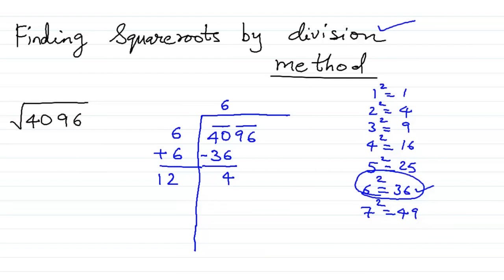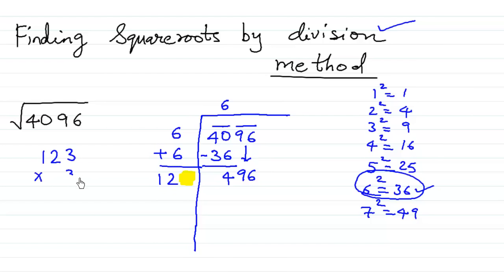We need some space to write one more digit. Then we bring down 96 together — remember it is a group, so 96 comes down together to give 496. Now we are looking for a number starting with 12, for instance 123, but if I write 123 and multiply by 3: 3×3=9, 2×3=6, 1×3=3, so we get 369, but I want 496.